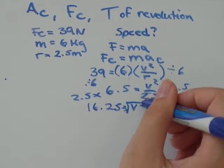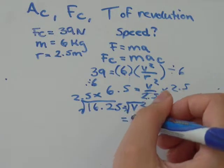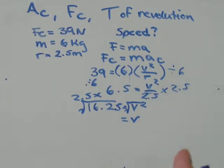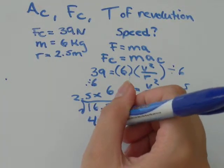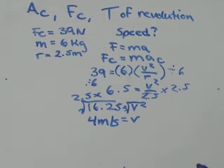So v, we'll just take the square root of both sides. And the square root of 16.25 is about equal to, I get 4.03. So let's just say that's about equal to 4 meters per second. So that's all there is to finding speed.